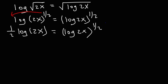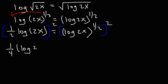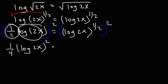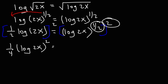Now we want to get rid of the fractional exponent. The best way is to square both sides of the equation. On the left, 1/2 squared is 1/4, multiplied by log 2x squared — you square the 1/2 and the log part separately. On the right, log 2x raised to the 1/2, then raised to the 2: multiply the exponents — 1/2 times 2 equals 1 — so those cancel and we just get log 2x.